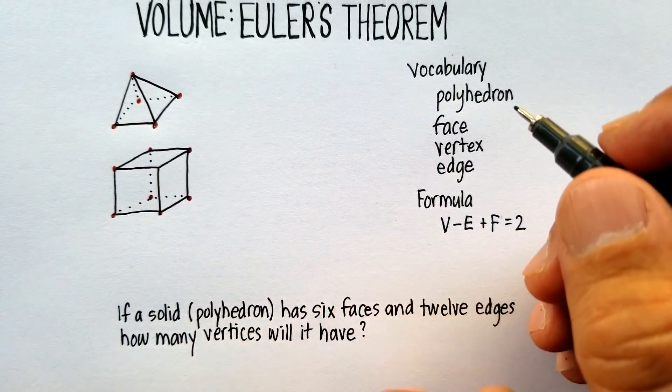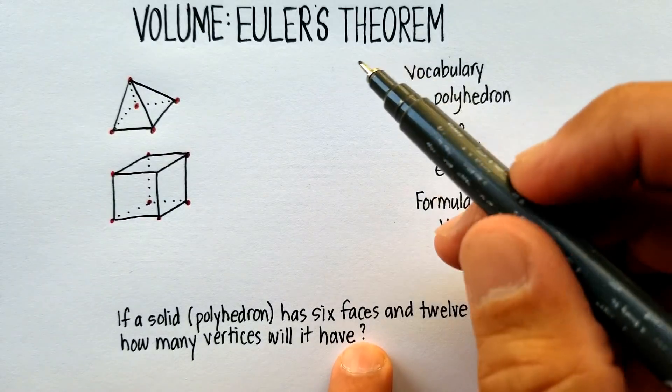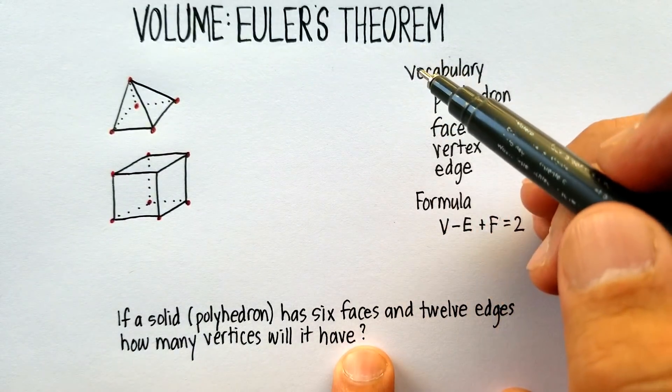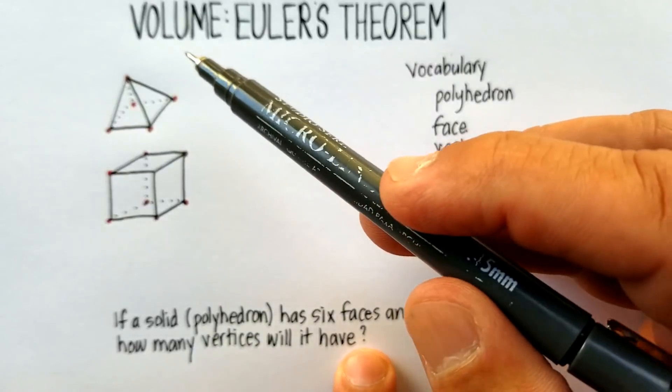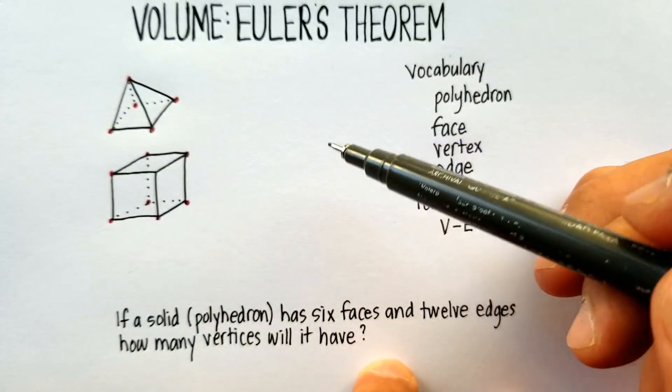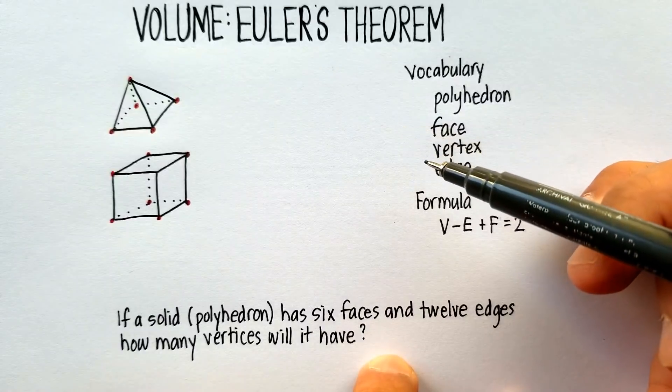Okay, in this video, we're going to go over something called Euler's Theorem, or Euler's Formula. And it has to do with volumes of what are called polyhedrons, or polyhedra is the plural.